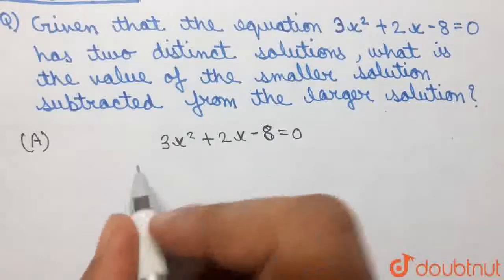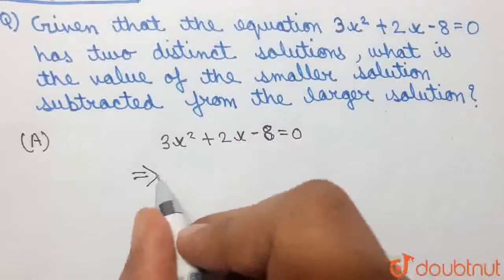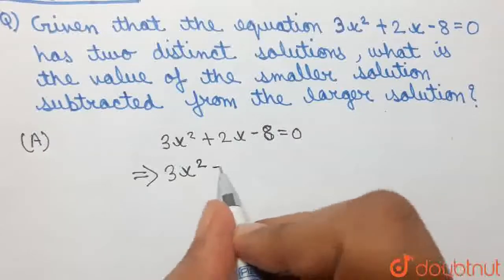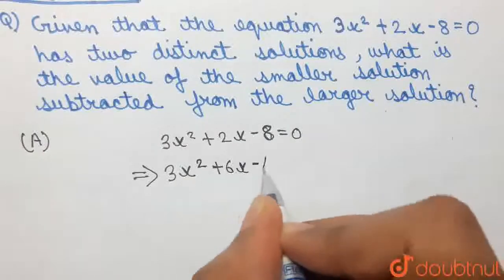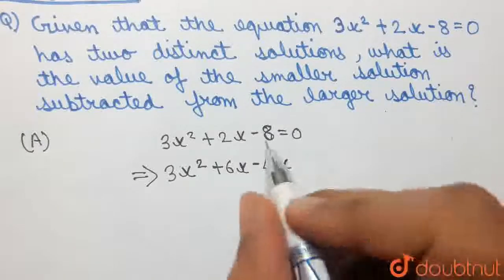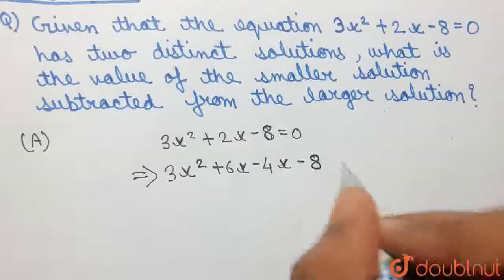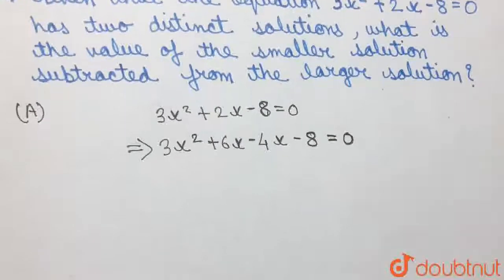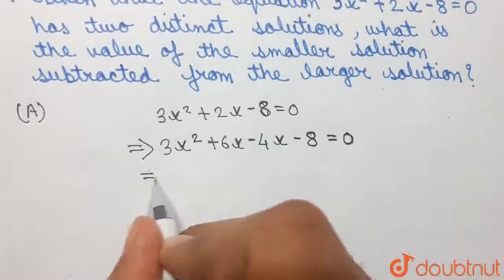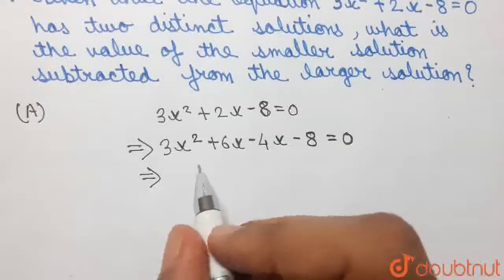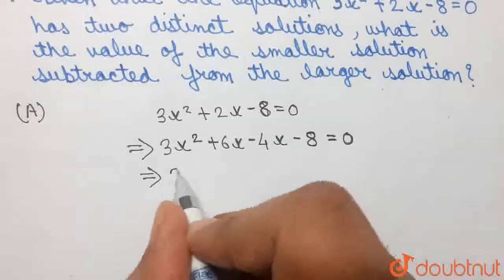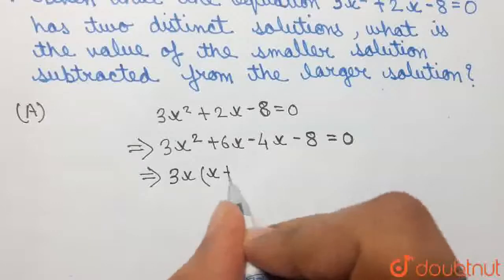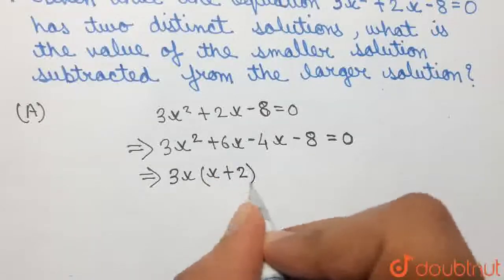So, this can be written equal to 3x squared plus 2x — which can be written as plus 6x minus 4x — and we have minus 8, which is equal to 0. Now, from the first two terms of the left hand side of this equation, if we take 3x common, taking 3x common from the first two terms, in this term we have x remaining whereas in the second term we have 2 remaining.